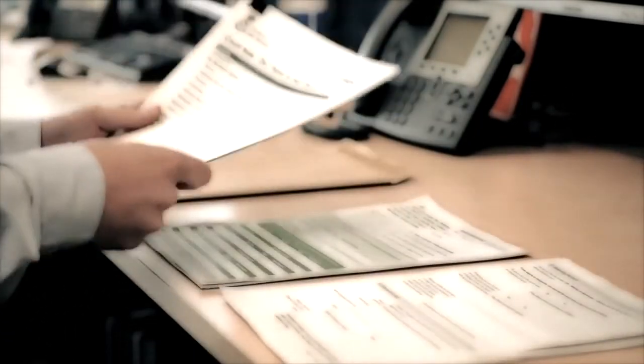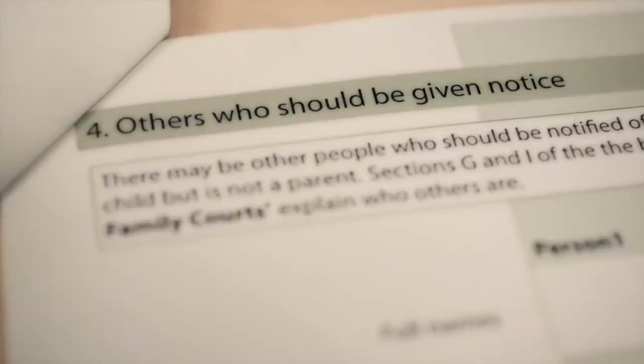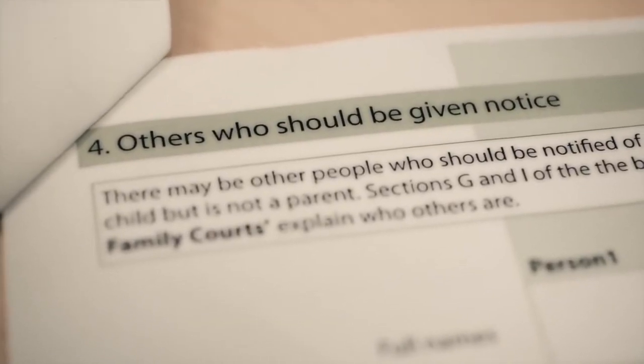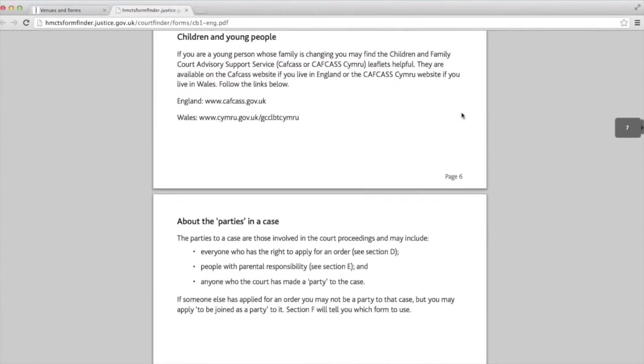Serving the Papers. The court will keep one copy of your forms and send all of the other copies back to you. A copy is for you to keep. You need to give a copy to the other parties involved in your case. This is called serving. You can serve by sending papers through the post. You must serve everyone who you have put in Section 3 and 4 of the C100 application form. These people are called the parties.